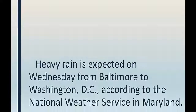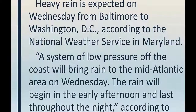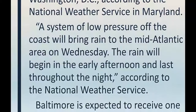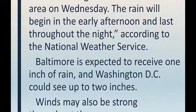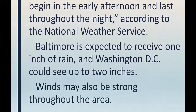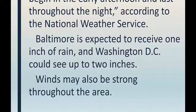Let's look at a simple example of a news story about the weather. Heavy rain is expected on Wednesday from Baltimore to Washington, D.C., according to the National Weather Service in Maryland. A system of low pressure off the coast will bring rain to the Mid-Atlantic area on Wednesday. The rain will begin in the early afternoon and last throughout the night, according to the National Weather Service. Baltimore is expected to receive one inch of rain, and Washington, D.C. could see up to two inches. Winds may also be strong throughout the area.